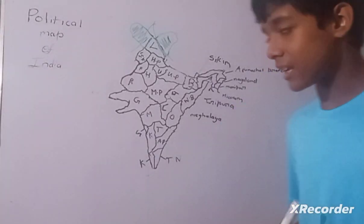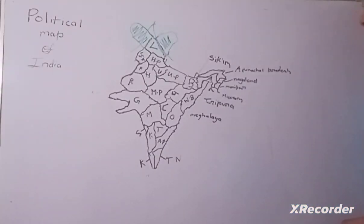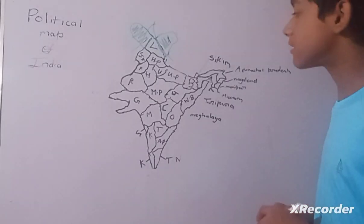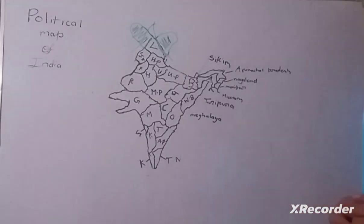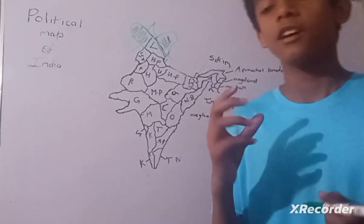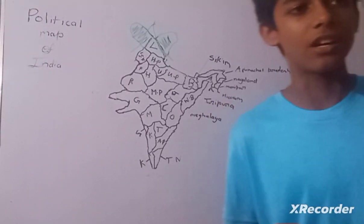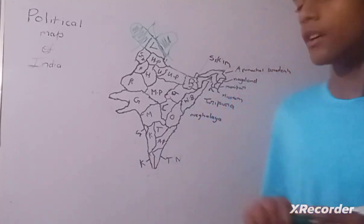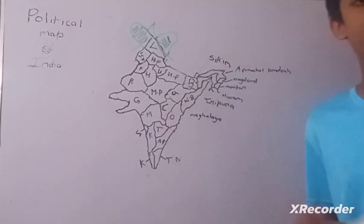Now about Rajasthan. Rajasthan is the largest state in India and two-thirds of Rajasthan is covered by Thar Desert. Thar Desert is the fourth largest desert of the world. Now Gujarat. Gujarat is famous for cotton industries, ports, and capital is Gandhinagar.